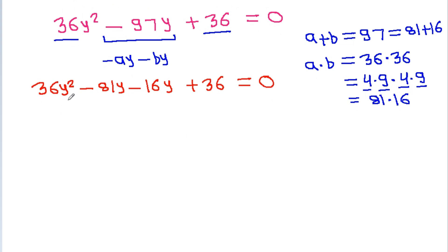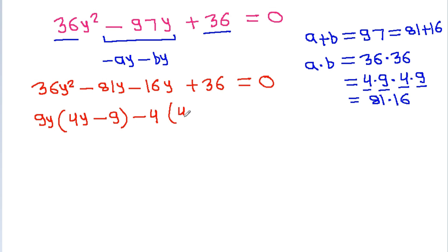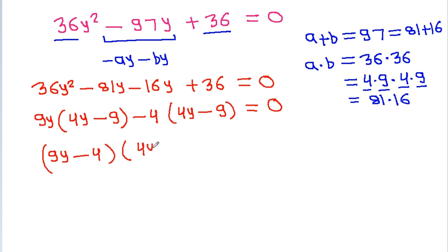Here we can take 9y common to get 9y(4y minus 9), and take minus 4 common to get minus 4(4y minus 9), so it becomes (9y minus 4)(4y minus 9) equals 0.